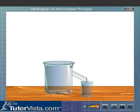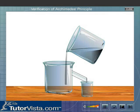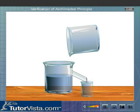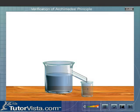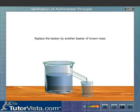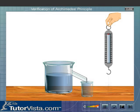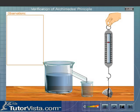Arrange the Eureka can and the beaker on the table as shown. Pour water into the Eureka can till the water starts overflowing through the spout. When water stops dripping, replace the beaker with another beaker of known mass. Suspend a stone with the help of a string from the hook of a spring balance and record its weight.